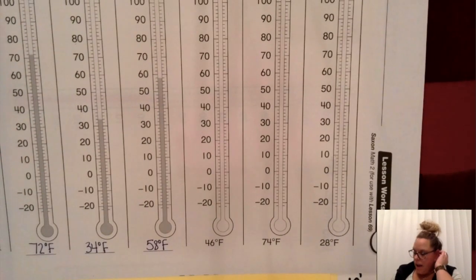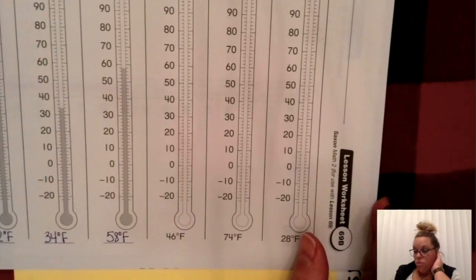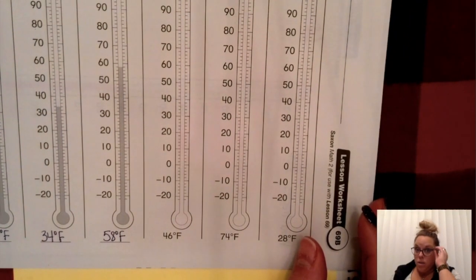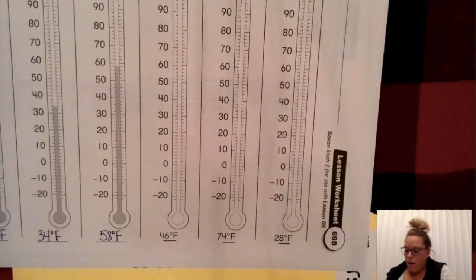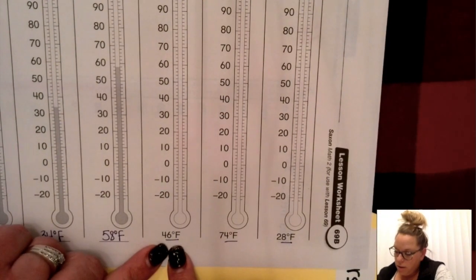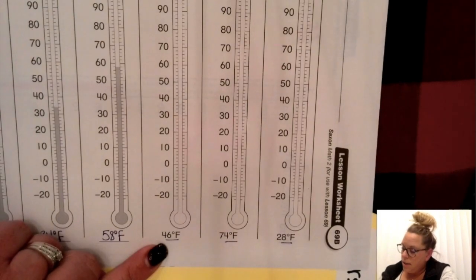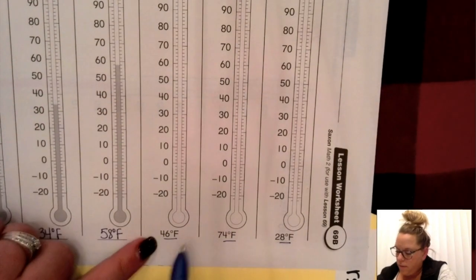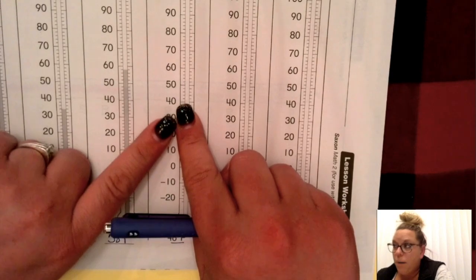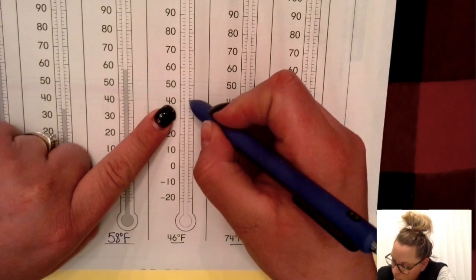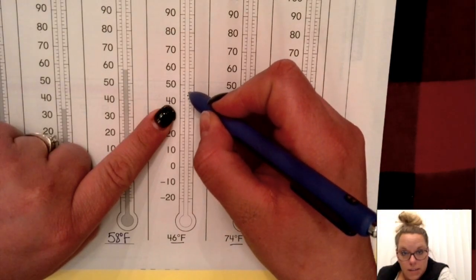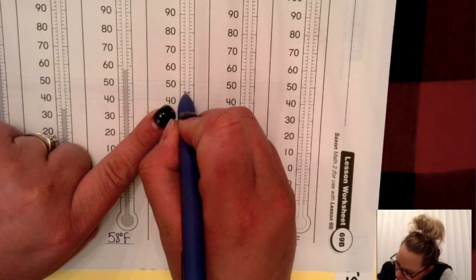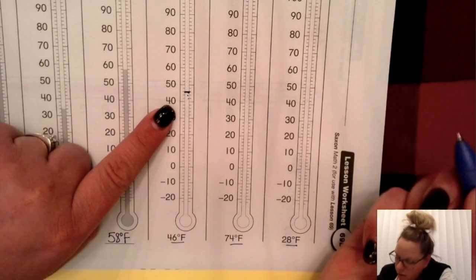Now, these next three we have to do the work. These three we have to fill in these temperatures that are right here. So 46 degrees Fahrenheit. Well, 46 is going to be in between 40 and 50, right? So we have to go to 40 and we have to count by twos until we get to 46: 42, 44, 46. So it was that third line. We're going to draw a line straight across there.